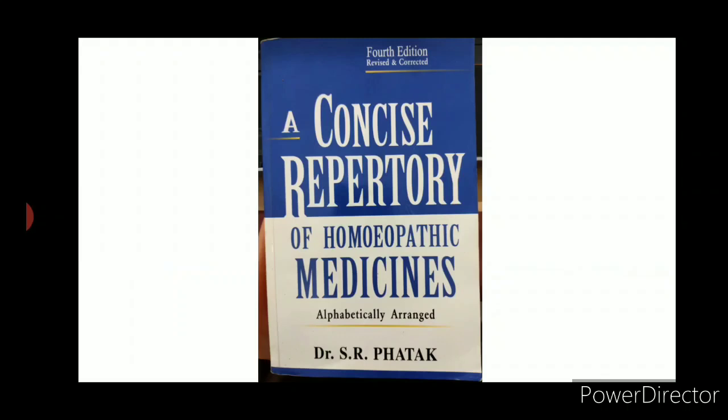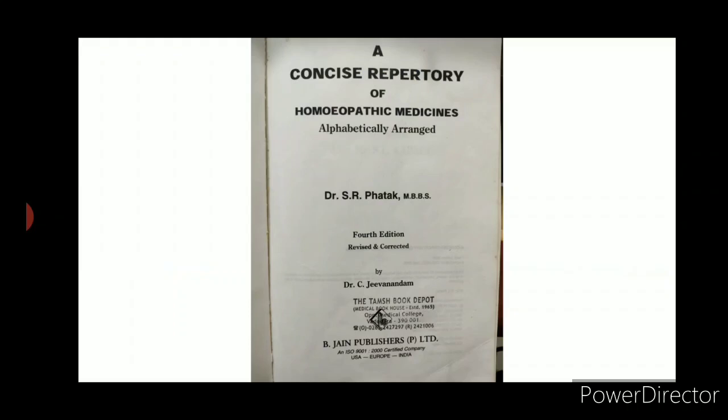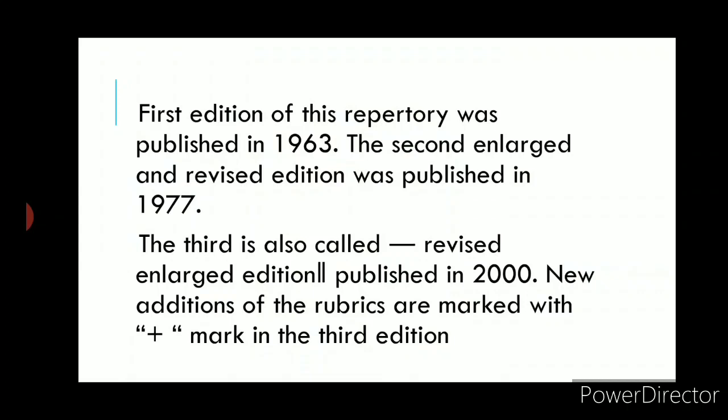This repertory is an alphabetically arranged repertory which does not have any particular chapters, but only rubrics arranged in alphabetical order. The first edition was published in 1963, the second edition in 1977, and the third edition — also called the revised and enlarged edition — was published in 2000.